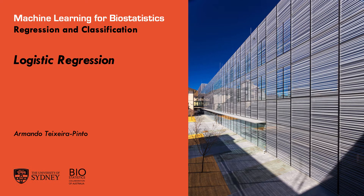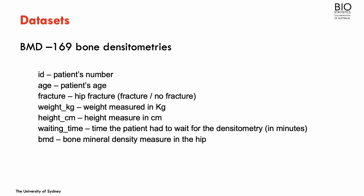And despite the name including regression, the logistic model is going to be a classification method because it's predicting a categorical outcome. We're going to use two datasets as an example. The one that we've been using so far — the bone mineral density — includes 169 bone densitometries.